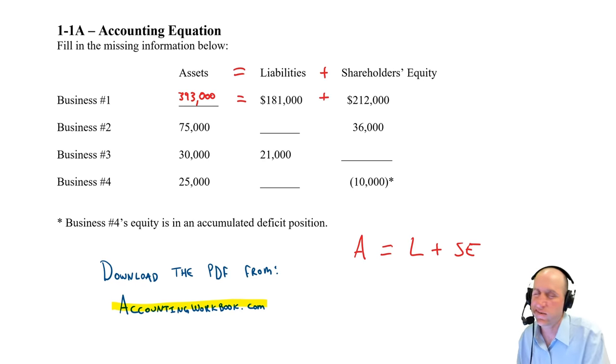And again, just sort of saying what they have: $393,000 of good stuff that they own and control, $181,000 of debts that have to be paid back. If they liquidated all their assets, got $393,000 cash, paid their debts of 181, $212,000 would flow through to the shareholders. The shareholders' piece of the pie is $212,000 for business number one.